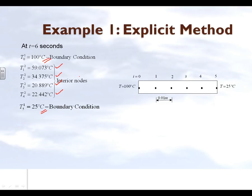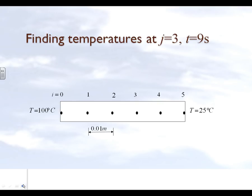Now all the internal nodes are changing, because the nodes adjacent to the boundary changed in the previous step, propagating influence further inward. Had we had more nodes, some would still show 20°C. The last step is to find temperatures at j=3, which corresponds to t=9 seconds, using the temperatures computed at t=6 seconds.